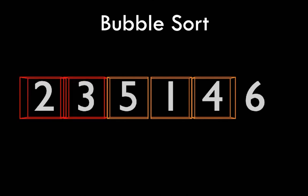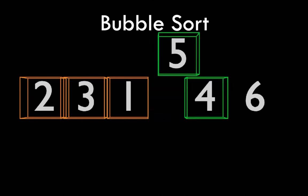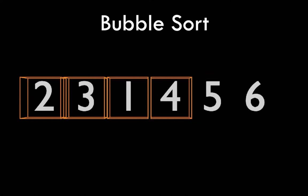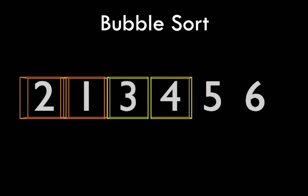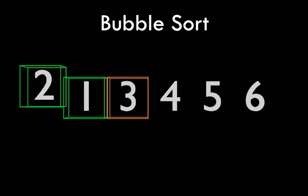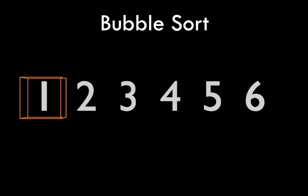Now we go back to the start and run the same algorithm again. Two is compared to three — it's not greater than three, so we move along and check three against five — it's not greater than five. Then five is compared with one and we make a swap. Five is compared with four and we make a swap — five is now in its rightful place. We start again: two is compared with three, not greater. Three is compared with one — greater, so we make a swap. Three is compared with four — not greater, so four is in its rightful place. Two is compared with one — two is greater so we make a swap. Two is compared with three — no swap. We go back to the start, run the final pass: one is compared to two, no swap made. We made a pass and no swaps were made — the list is now sorted.